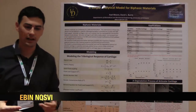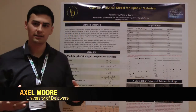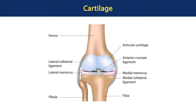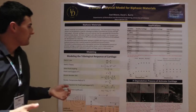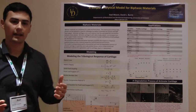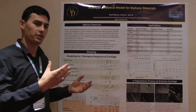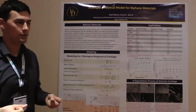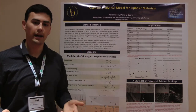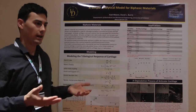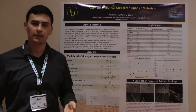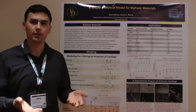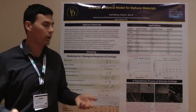So biphasic materials — I'm going to talk about cartilage mainly. I like to think of cartilage like a sponge. It's got a solid phase and a fluid phase, and both of them are capable of supporting the load. We've developed an equation that shows how much of the load is supported by fluid and how much is supported by solid. If you think of a hydrodynamic bearing, everything is supported by fluid pressure, so the fluid load fraction — the fraction of the load supported by fluid relative to the total applied load — would equal one.